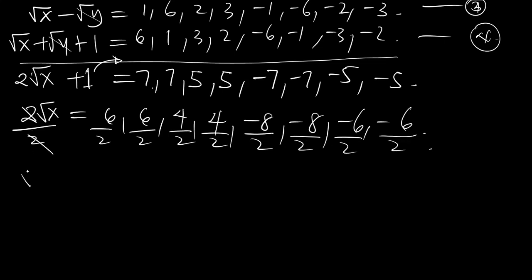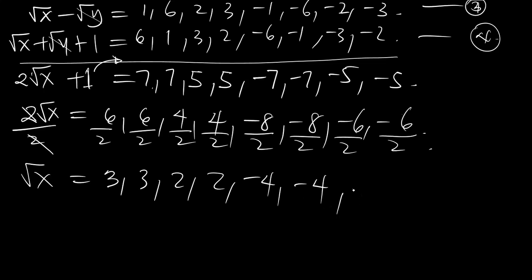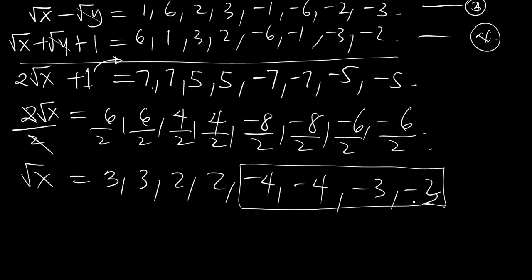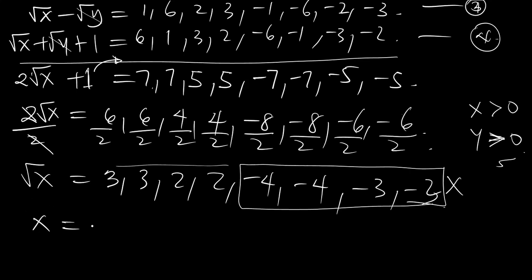Dividing all through by 2, the 2 cancels and you have the square root of x equals 3, 3, 2, and 2. Then minus 4, minus 4, minus 3, minus 3 — these are not solutions since x should be greater than 0 and y should be greater than 0. So we consider only the positive values. Squaring both sides, we get x equal to 9, 9, 4, 4.